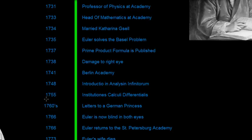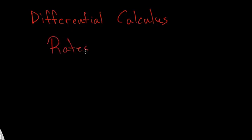So, it was in 1755 that Euler wrote a book on Differential Calculus, and I'll just give you a brief idea of what that is. Differential Calculus